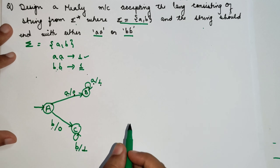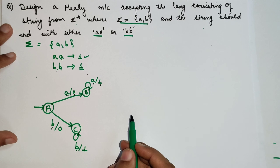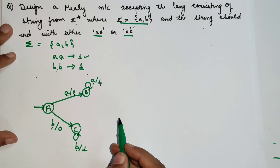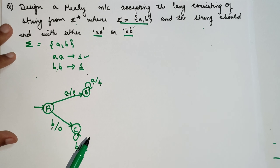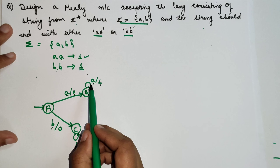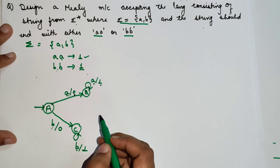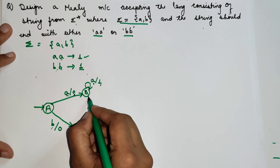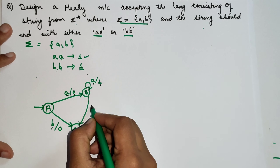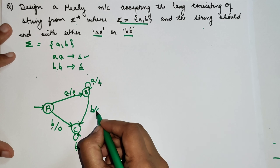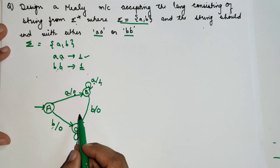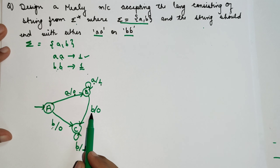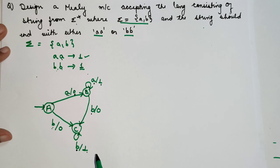Now, as we are designing the DFA, we have to mark transitions for both inputs A and B. For state A, both inputs A and B have been completed. But for state B, only the A transition is completed — B is still remaining. So where do we take B? We can mark this B transition to state C. If B is encountered, we produce output 0.